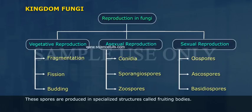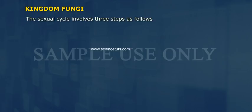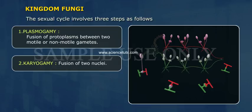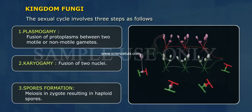These spores are produced in specialized structures called fruiting bodies. The sexual cycle involves three steps: 1. Plasmogamy — fusion of protoplasms between two motile or non-motile gametes. 2. Karyogamy — fusion of two nuclei. 3. Spore formation — meiosis in the zygote resulting in haploid spores.